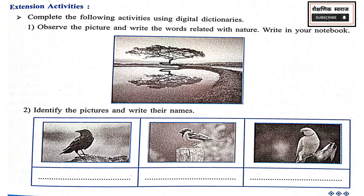Activity: complete the following activity by using the Digital Dictionary. Observe the picture and write the word related with nature in your notebook. Identify the pictures and write their names. This is a crow. This is a sparrow. And this is a parrot.